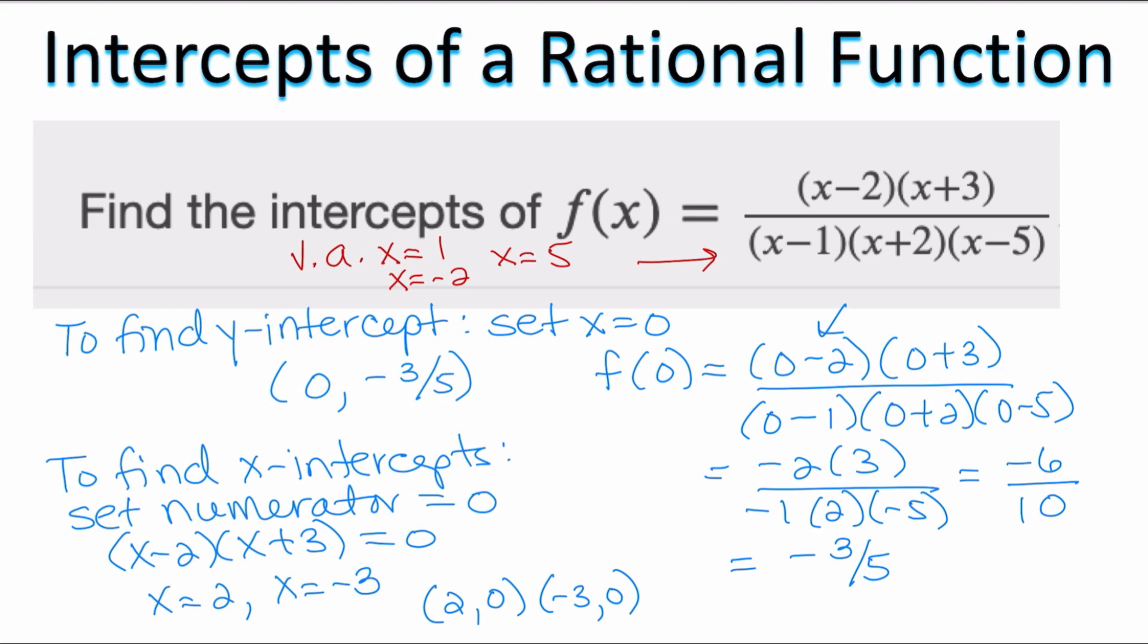So to find y-intercept, substitute 0 for x everywhere you see an x. But to find the x-intercept in a rational function, which kind of looks like a fraction, all you have to do is take the numerator and set it equal to 0.